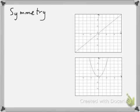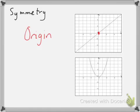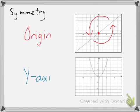You'll also be asked to describe the symmetry of each function. There are three different kinds of symmetry that you might see. In the case of the linear function, this has symmetry about the origin — because if you rotated the function 180 degrees, it would map back onto itself. The quadratic function has symmetry about the y-axis, because if you reflected it over the y-axis it would reflect onto itself. It is also possible that some functions, such as the square root function, would have no symmetry whatsoever.